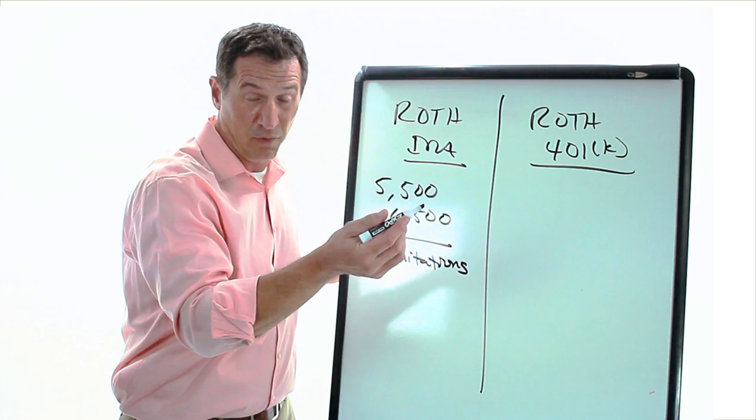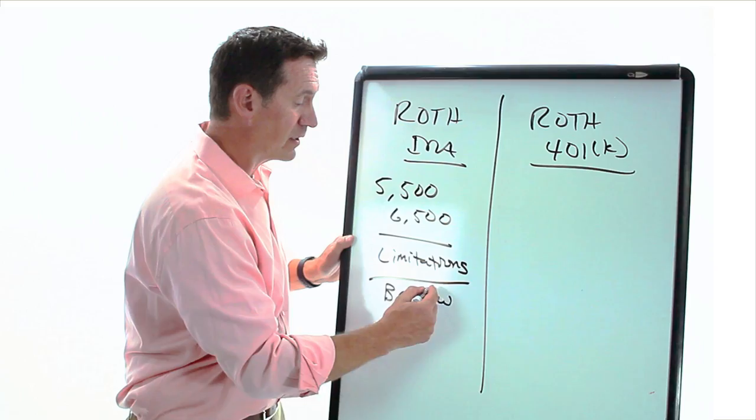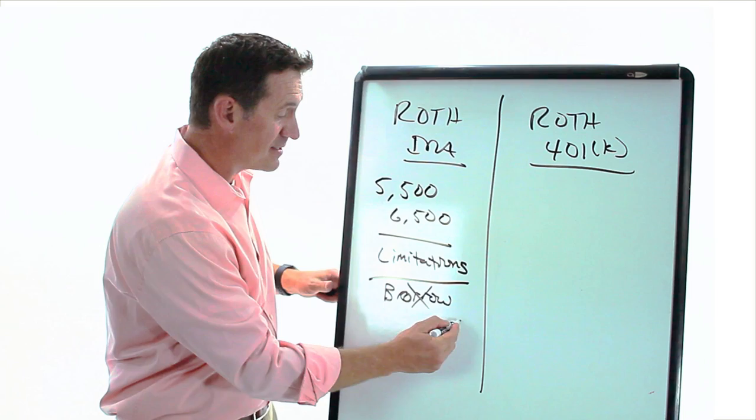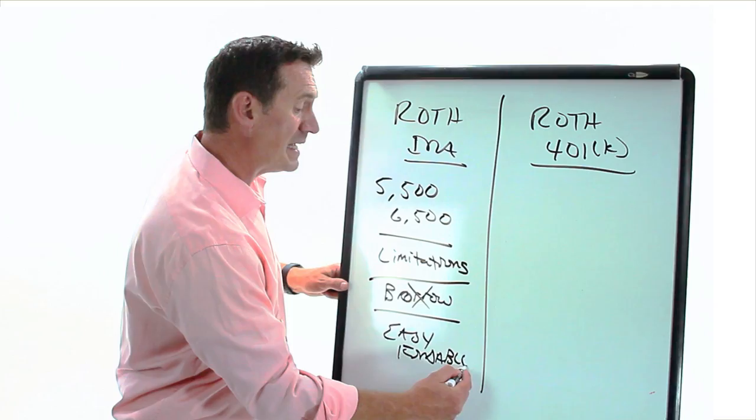You cannot borrow against your Roth IRA, so that's another problem when you start comparing them with the Roth 401k. But the Roth IRA is simple, it's easy, and it's cheap to set up, so that's easy and affordable.